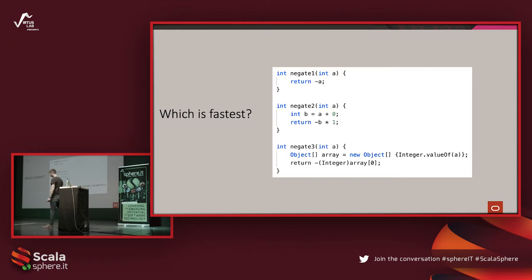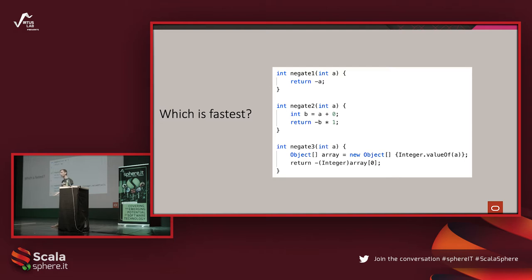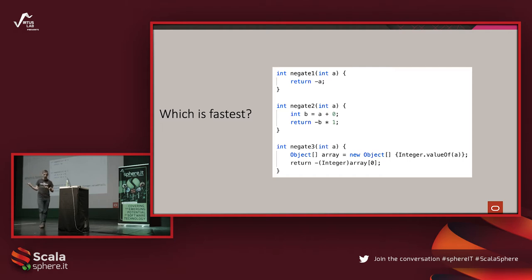Before answering that question, let's step back and think about how we run Java code. We run Java code using a JVM — OpenJDK or any other alternative. The JVM works by starting with interpreting your code. It's a fairly slow process, but it gathers a lot of statistics while it runs in interpreter mode. In the end, it decides that a function has been called many, many times — it considers it a hot method — and gives that function to the compiler, which produces highly optimized machine code.